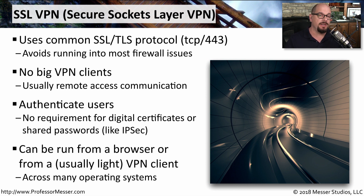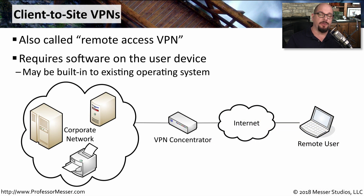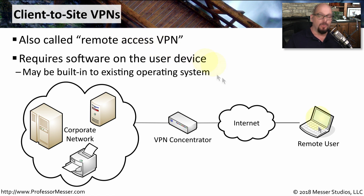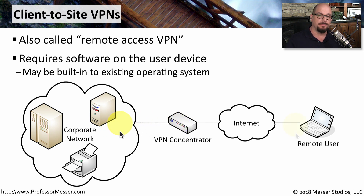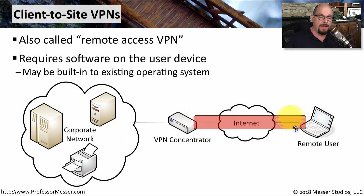You'll find support for SSL VPNs in many different operating systems, and there are many implementations that can run from inside a browser. This configuration is also referred to as a client-to-site VPN or a remote access VPN. Software needs to be installed on the remote user's workstation to use the SSL VPN, and that device connects to a VPN concentrator — often a firewall installed at the remote location. The user starts their software, authenticates to the VPN concentrator, and from that point forward, everything between the remote user and the VPN concentrator uses an encrypted channel.